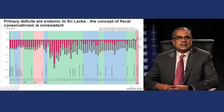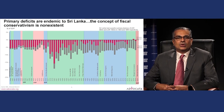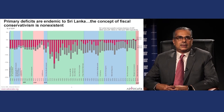The only other instances since the mid-1950s were a marginal balance in 2017 and a surplus of 0.6 to 0.8 percent of GDP in 2018. This was reversed in 2019 due to the Easter bombings, and a blowout primary deficit is expected due to COVID-19. This behavior is endemic to Sri Lanka — fiscal conservatism appears to be non-existent.